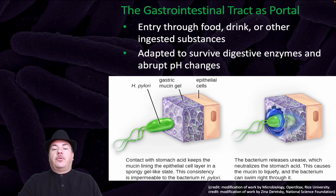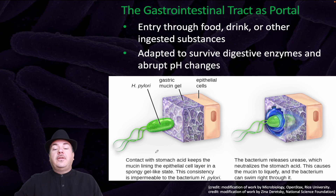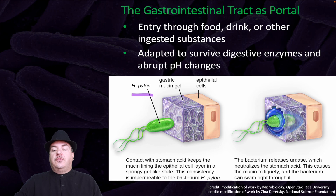The gastrointestinal tract can be a portal of entry through food, drink, or other ingested substances. Organisms that use this portal are adapted to survive digestive enzymes and abrupt pH changes. One example is H. pylori. Normally, contact with stomach acid keeps the mucin lining the epithelial cell layer in a spongy gel-like state impenetrable to H. pylori. However, the bacteria releases urease, which neutralizes the stomach acid, causing the mucin to liquefy so the bacterium can swim right through it.